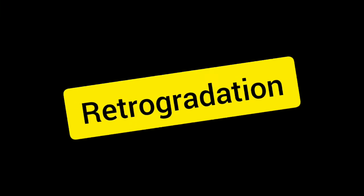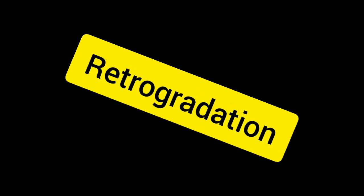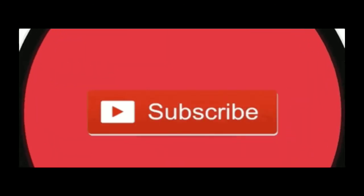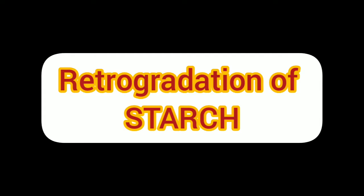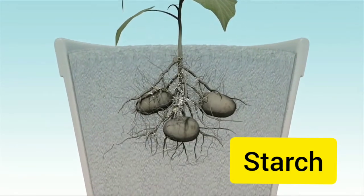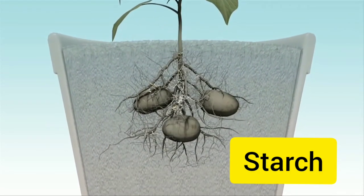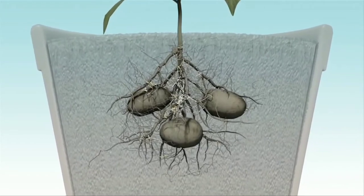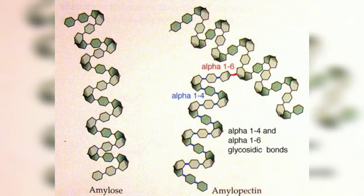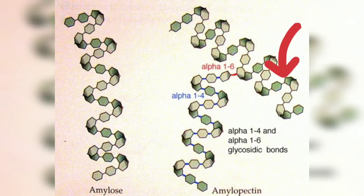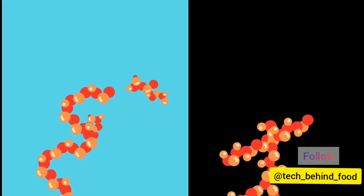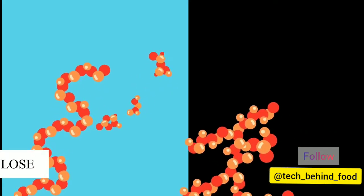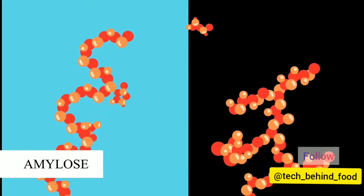This is because of retrogradation. In this video we'll be discussing retrogradation of starch. Starches are naturally occurring carbohydrates produced by plants. They are chains of glucose polymers and can be in linear form or branched form. The linear glucose chain is called amylose and the branched glucose chain is called amylopectin.